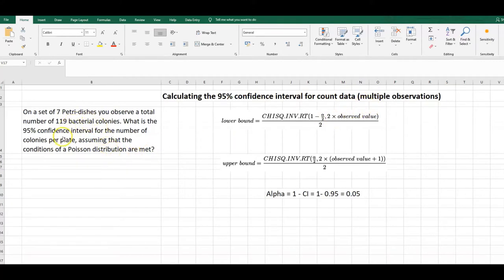So a typical experiment would be, for example, we have seven petri dishes or agar plates, and we plate some bacteria on them and count the total number of colonies. We find we've got 119 bacterial colonies on these seven petri dishes together, and we want to know what is the 95% confidence interval for the number of colonies per plate.